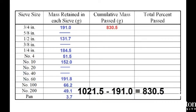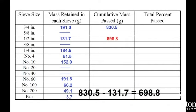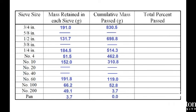For example, the total mass of the sample was 1021.5 grams. The mass retained by the largest three-quarter inch sieve was 191.0 grams, which means that the mass passing this sieve is 830.5 grams. For the half-inch sieve, 131.7 grams was retained, which means that the mass passing this sieve was 698.8 grams. When you've done this, make sure your cumulative mass passed at the pan is 0 grams. If it's not, you have made a mistake in your calculations.